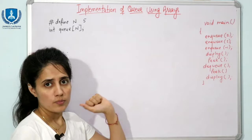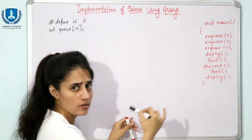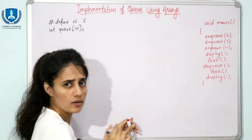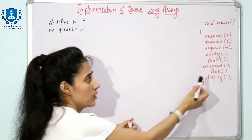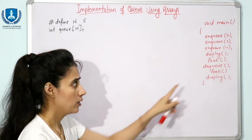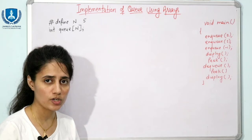In the main function, I am calling the enqueue function three times, passing 2, 5, and -1 — meaning I want to insert 2, then 5, then -1. After that, we will display the queue contents. Then the peek operation — which tells you the front value of the queue without removing it — then dequeue, then peek again, and display once more. I am declaring the array globally using static memory allocation: int queue[N], where N is defined by the macro.